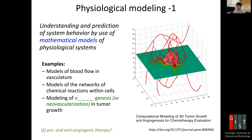This new vascular growth is called angiogenesis, and physiological modeling allows us to model this process. As an example, when a tumor grows it secretes factors which allow new growth of blood vessels to feed the tumor. We can perform computational modeling of 3D tumor growth and angiogenesis.